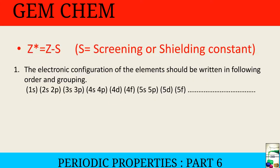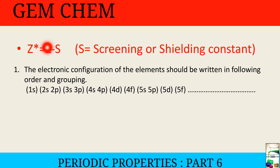First we have to know this term: Z* is the effective nuclear charge, and it is given by the nuclear charge minus the screening or shielding constant.